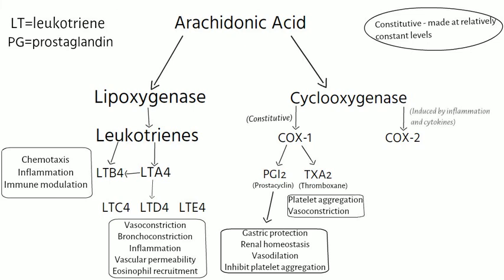The COX-2 pathway is induced by inflammation and cytokine signaling. The major products of the COX-2 pathway are prostaglandin D2, prostaglandin E2, and prostaglandin F2-alpha.